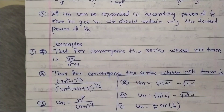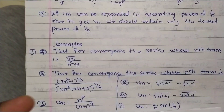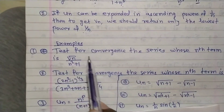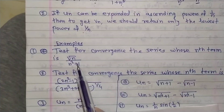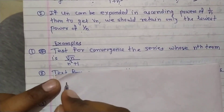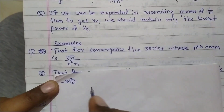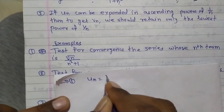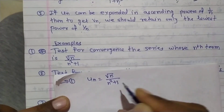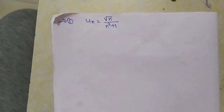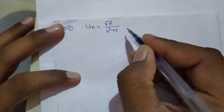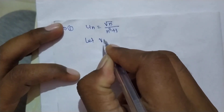We will take problems on comparison test today, and in the next video we will start the ratio test or cover more comparison test problems. For the first problem: test for the convergence of the series whose nth term is un = √n / (n² + 1). We will use the comparison test.